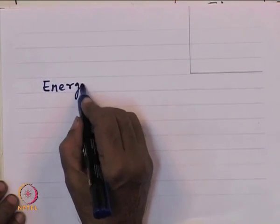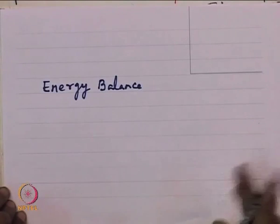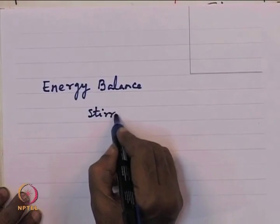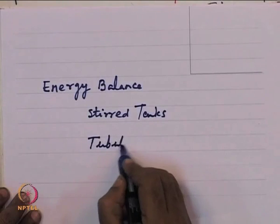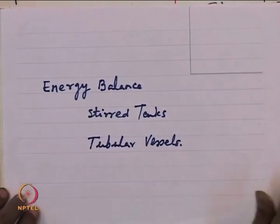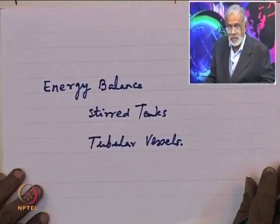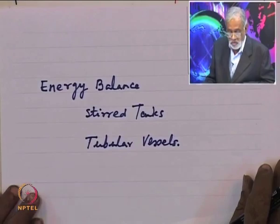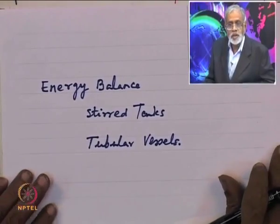We go on with that. We look at energy balance, and we mentioned in the last edition that energy balance covers two issues: one is stirred tanks and tubular vessels. Stirred tanks are quite popular particularly in small scale processing, while tubular vessels are generally for very large scale processing. Whether it is small or large, we need to conduct the chemical reactions of our interest, and therefore adding and removing heat and controlling the temperature at which we conduct the reaction is crucial to the success of operations.